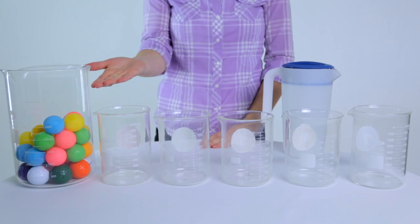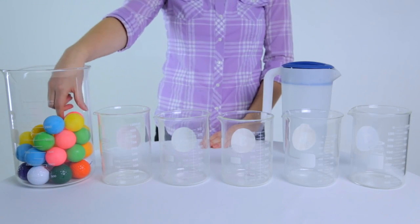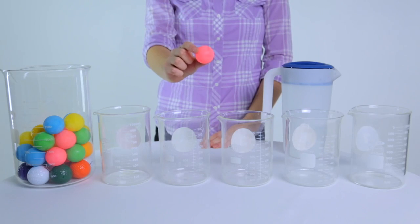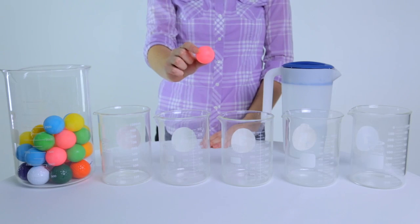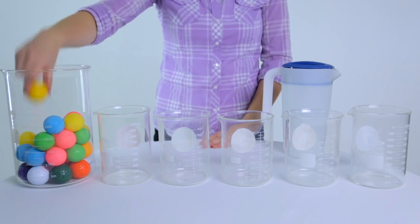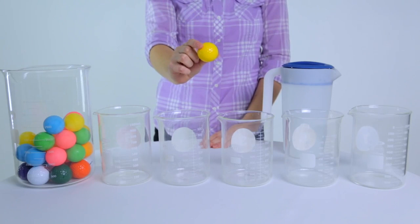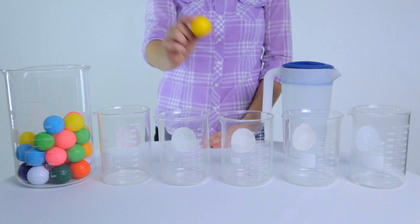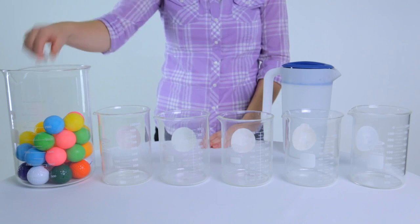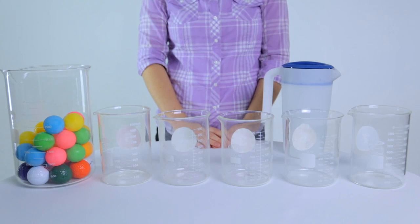Here is a beaker full of golf and ping pong balls that together represent the raw plant material. Each colored ping pong ball represents a different volatile aromatic compound. The golf balls represent other compounds found in the plant material that are structurally too large or heavy to be collected by steam distillation and will not be found in the essential oil.